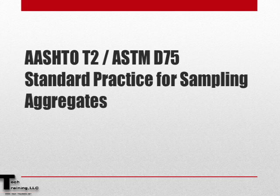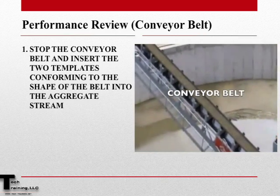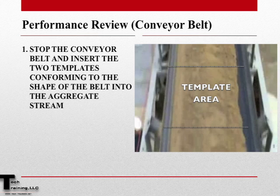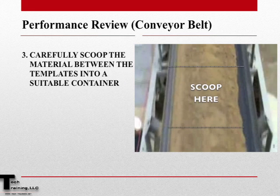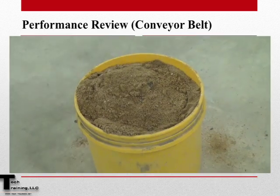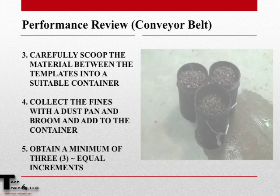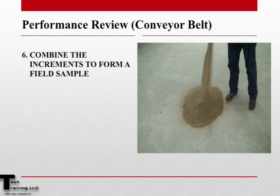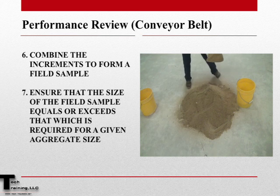Let's now review the key steps of this procedure, beginning with sampling from a conveyor belt. First, stop the conveyor belt and insert two templates that conform to the shape of the belt. Space the templates so that the material in between will yield an increment of the required mass. Carefully scoop the material in between the templates into a suitable container, then collect the fines with a dustpan and broom. Obtain at least three equal increments and recombine these increments to form your field sample. Make sure that your sample meets or exceeds that which is required for a given action.